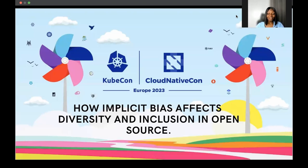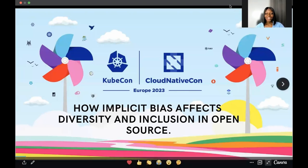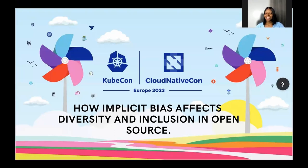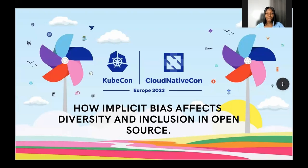Today I'll be speaking on the topic: how implicit bias affects diversity and inclusion in open source. We all know that there have been times where we may have acted less inclusively and with less understanding than we wanted to — perhaps a time where you made an insensitive joke, or said and did something considered microaggressive. Your actions perpetrated a bias stereotype and it did affect someone. We're going to discuss how this also affects diversity and inclusion within open source.